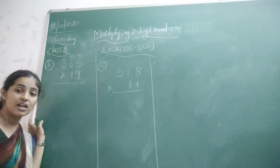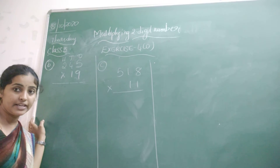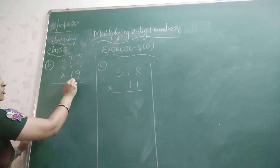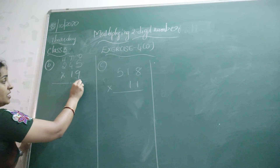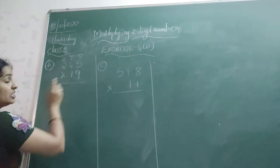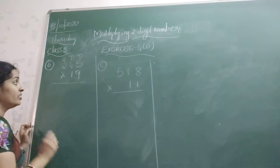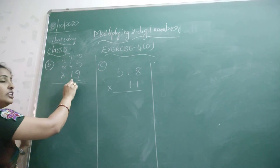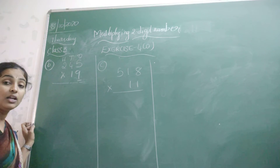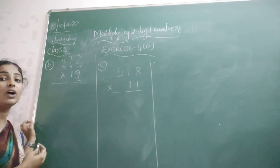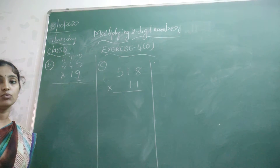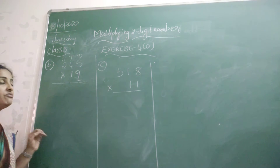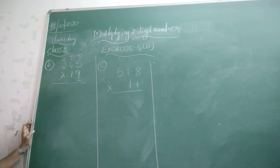So here we need to start multiplying from the 1's place. In 19, the number in the 1's place is 9. So first multiply with the 9. Then after that we need to multiply with the 1. Then we need to add the results and present the final answer.